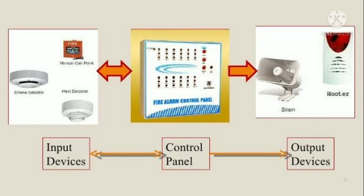The next device is the output device: siren and hooter. They are also sound devices, so we can use either. From the input device, the signal passes two ways to the control panel. From the control panel, it passes one way to the output device. When we press the manual call point, smoke detector, or heat detector, the return signal goes to the control panel. The control panel then activates the output device. The fire alarm system is simple.